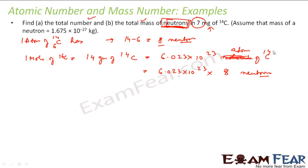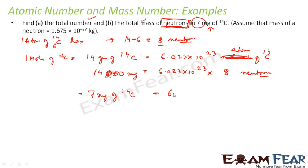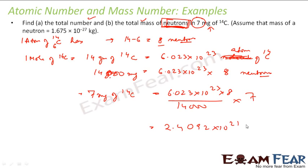14 grams of Carbon-14 has 6.023×10²³ × 8 neutrons, but we need 7 milligrams. Converting: 14 grams = 14,000 milligrams. So 7 milligrams will have (6.023×10²³ × 8 × 7) / 14,000 neutrons, which gives approximately 2.4×10²¹ neutrons.